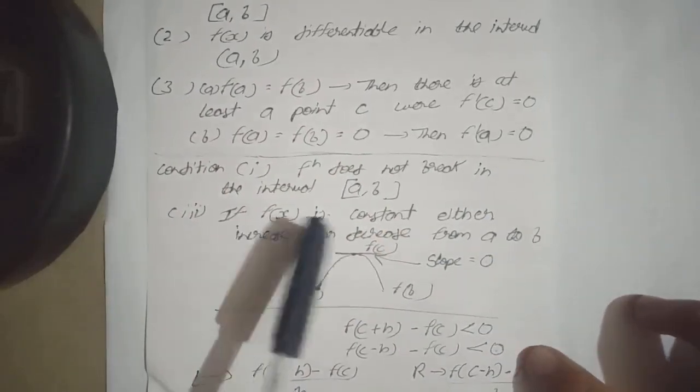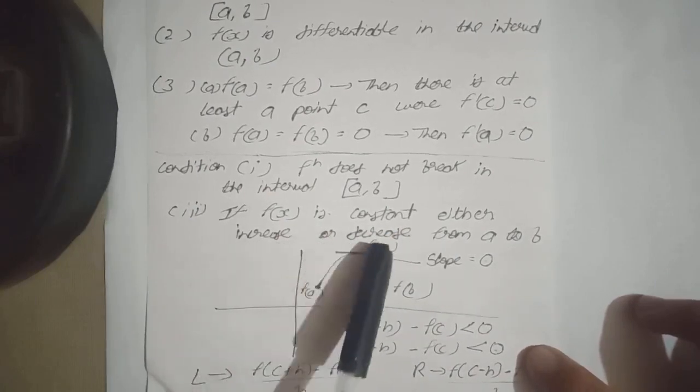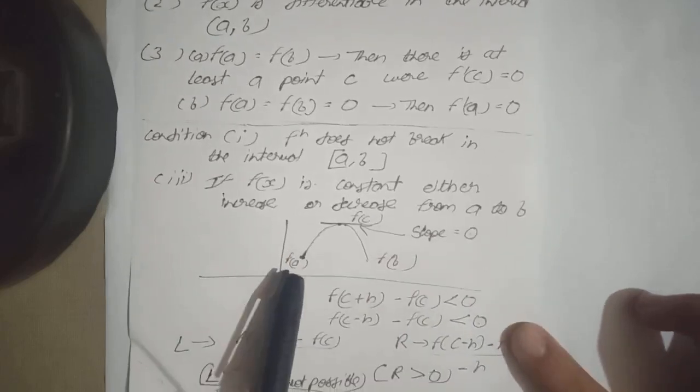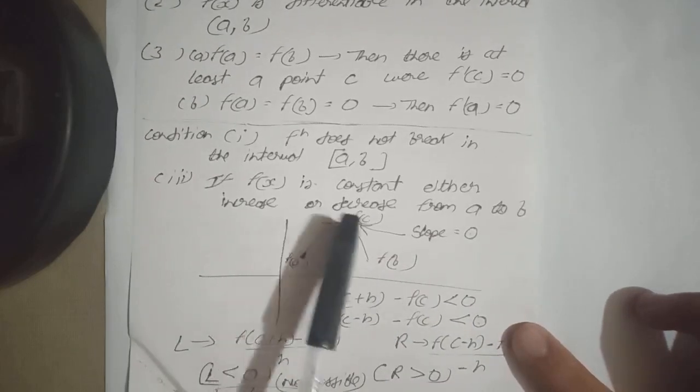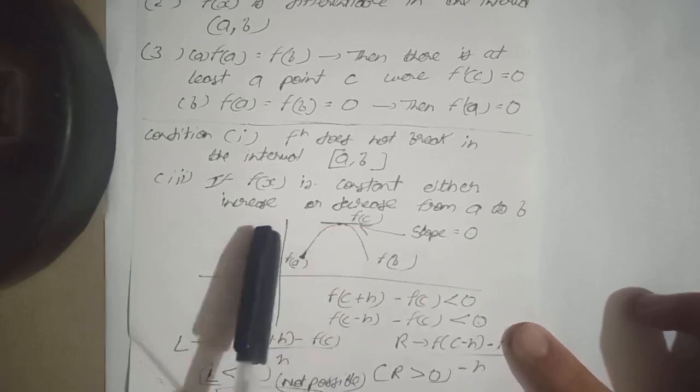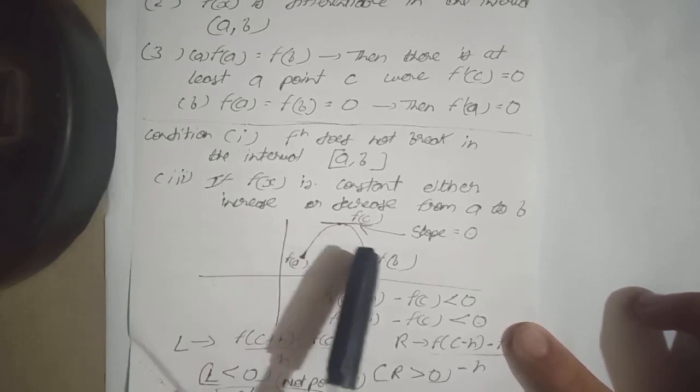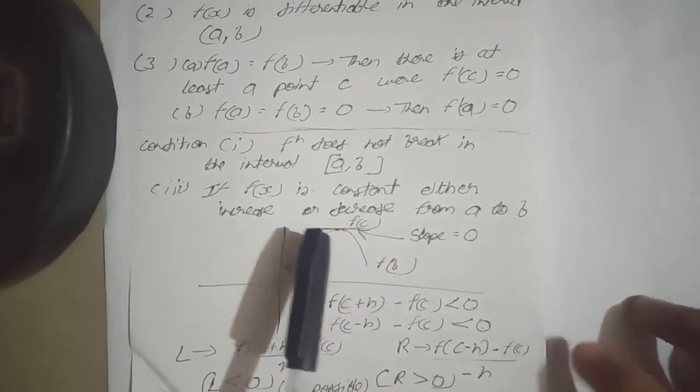If f(x) is constant, if f(x) is constant either increase or decrease from a to b, if f(a) is equal to f(b), so a se leekar b tak kahi na kahi ek point hooga jaha par differentiation of that point is zero, yarni ki slope is point zero hooga. Differentiation hame slope deta hai na.